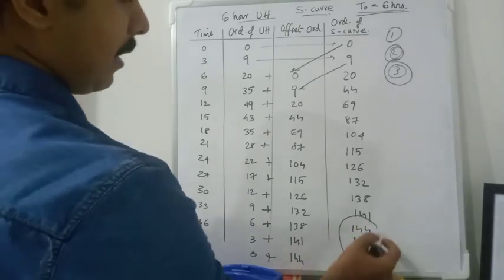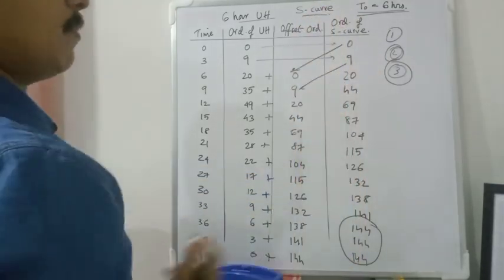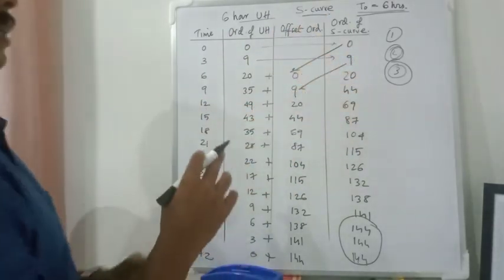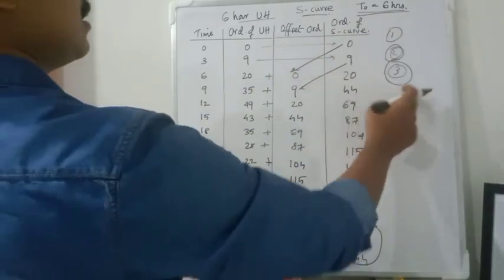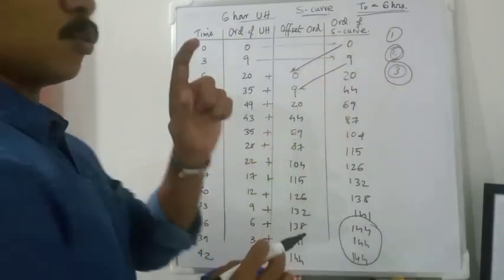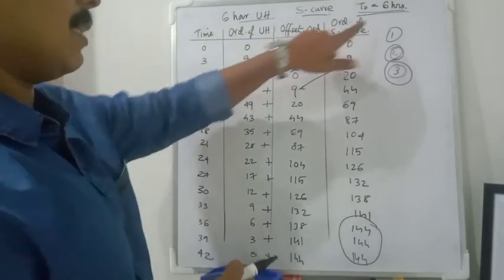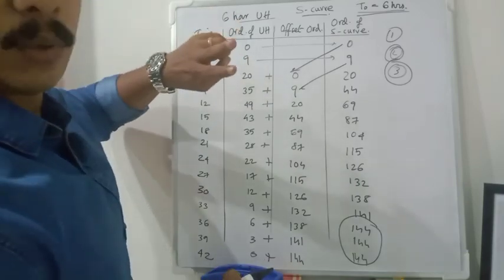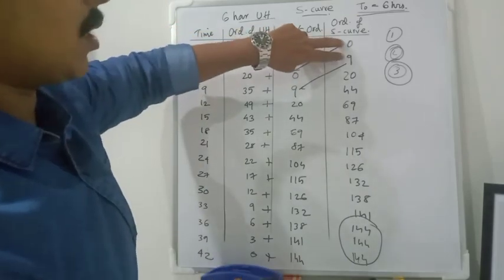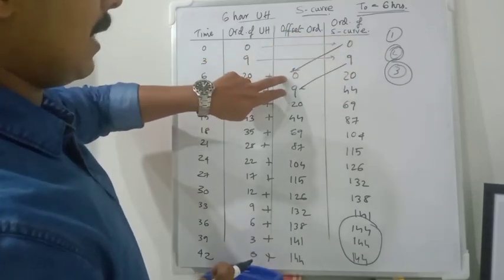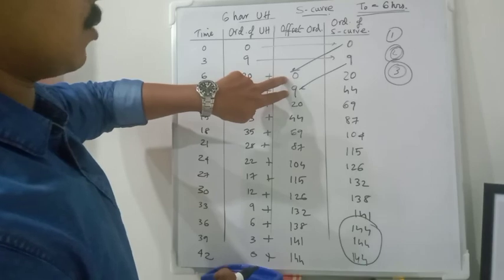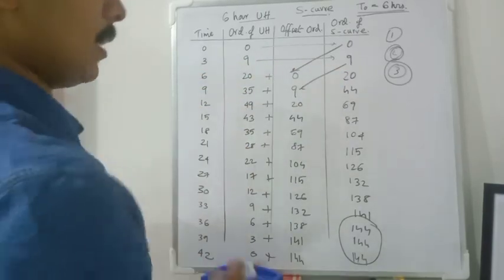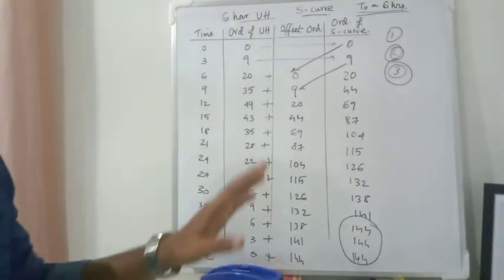You have obtained an equilibrium value Q0=144 — the same answer and same set of values as the first method, just a different approach. The three simple steps are: first, bypass the first two values (we took two because T0=6 hrs and interval=3 hrs); second, write those two values lagged by T0 in the offset ordinates column; third, add the second and third columns to get the final S-curve ordinates. I hope you understand this alternate method. Thank you.